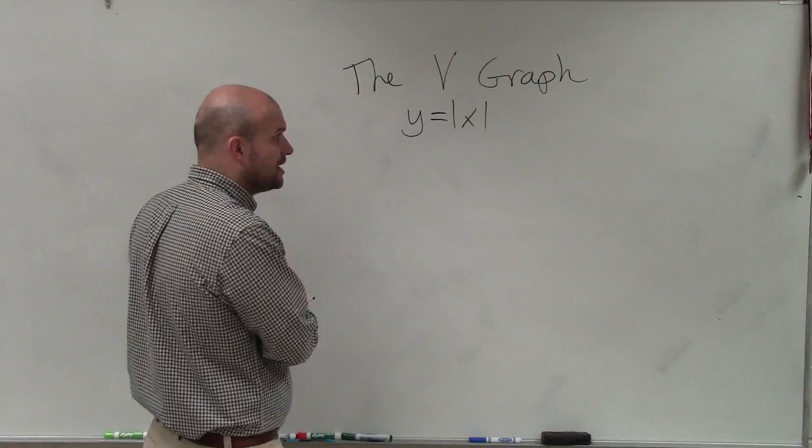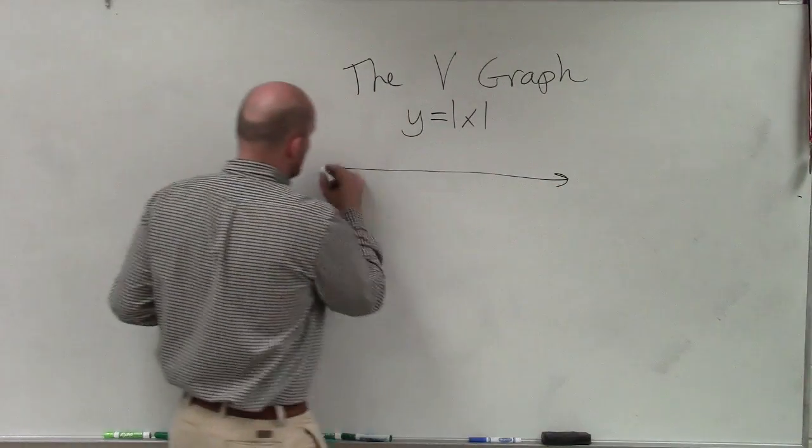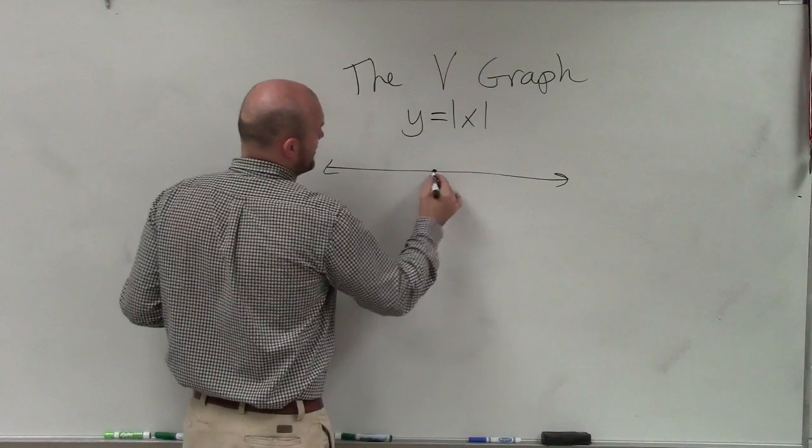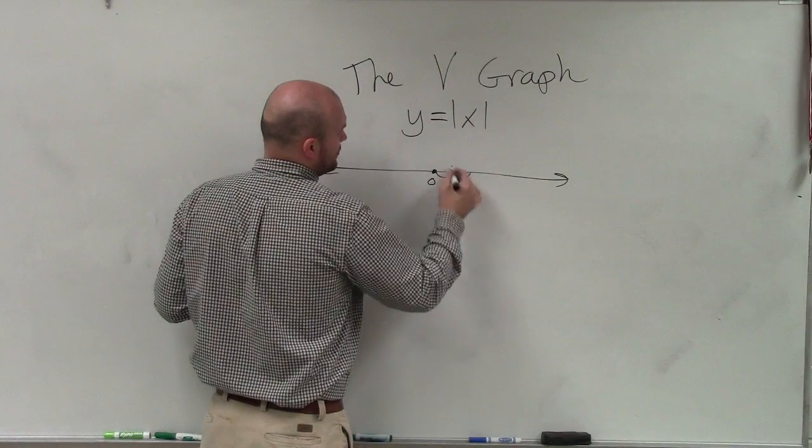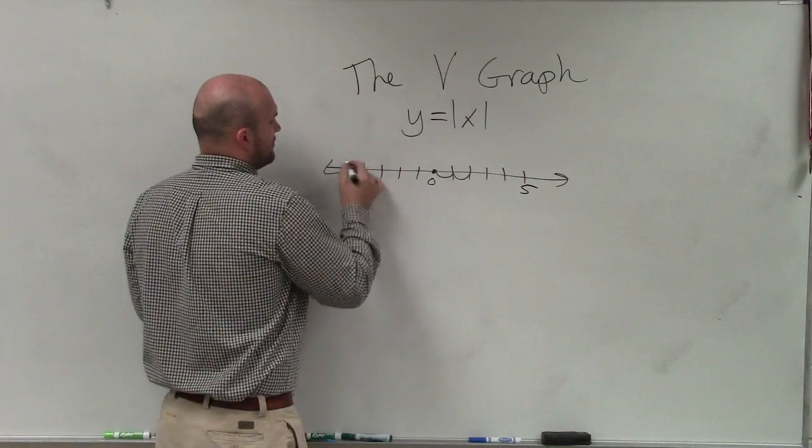First of all, though, I do want to make sure we understand at least what absolute value is. So I'm going to go through that very quickly. Remember, what the absolute value represents is the absolute distance from 0. 1, 2, 3, 4, 5. 1, 2, 3, 4, 5.